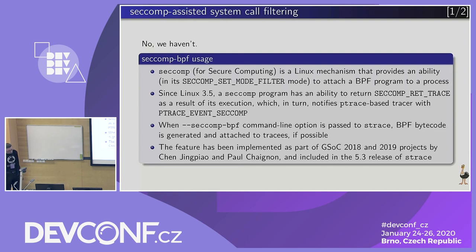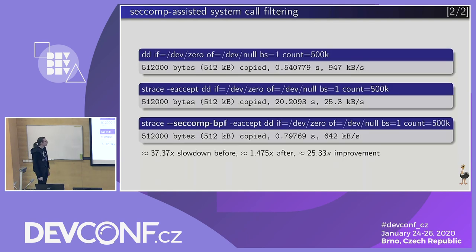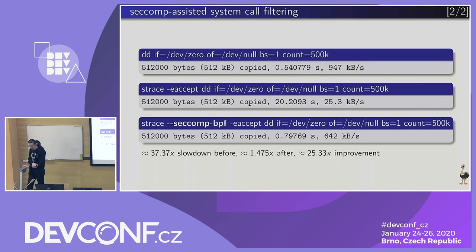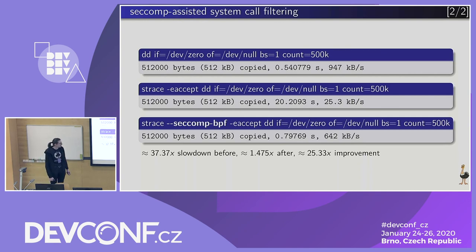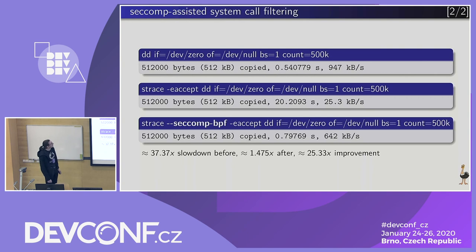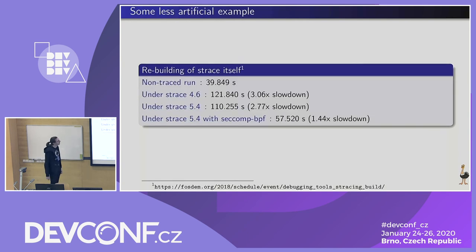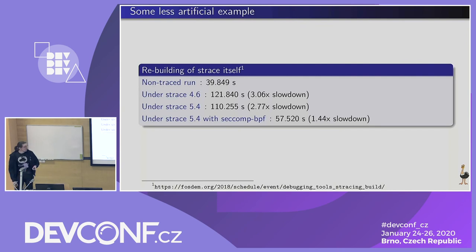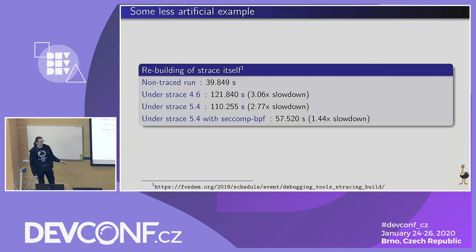Now with this seccomp BPF option, you slow down the tracee in this artificial example only by a couple of percent, not a couple of tens of times — which is probably a significant improvement. With more or less realistic examples, if you trace only memory-related syscalls, you gain only about one and a half times slowdown instead of two to three times.